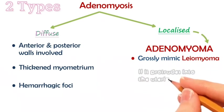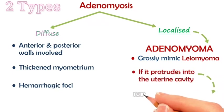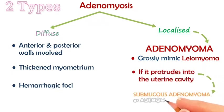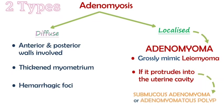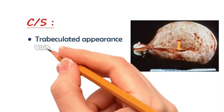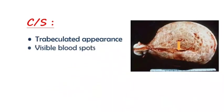If there is protrusion into the uterine cavity, it is known as submucous adenomyoma or adenomyomatous polyp. The cross-section of the gland shows a trabeculated appearance and visible blood spots.